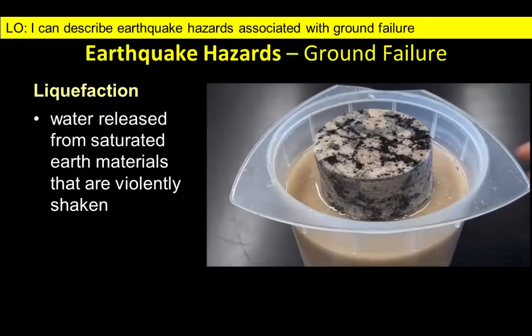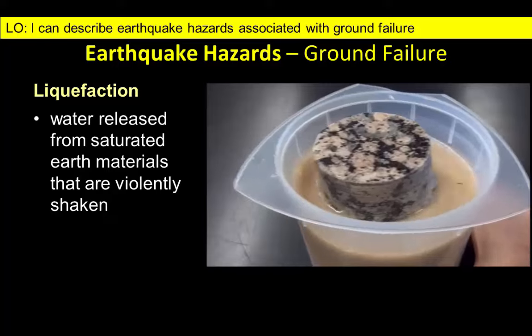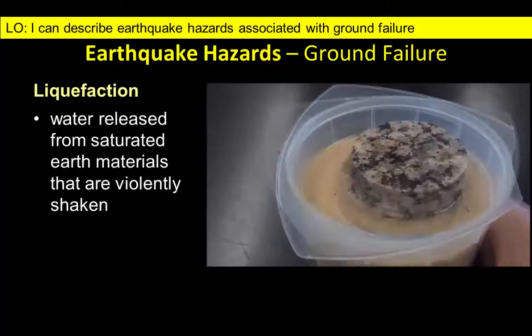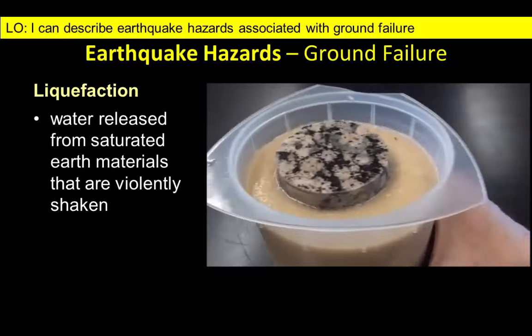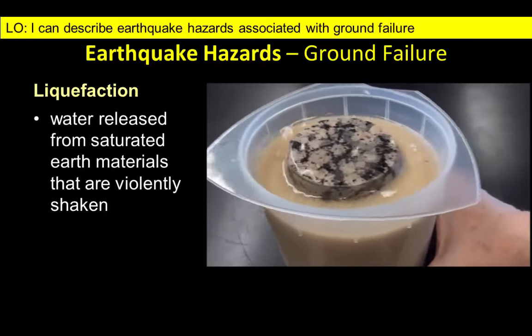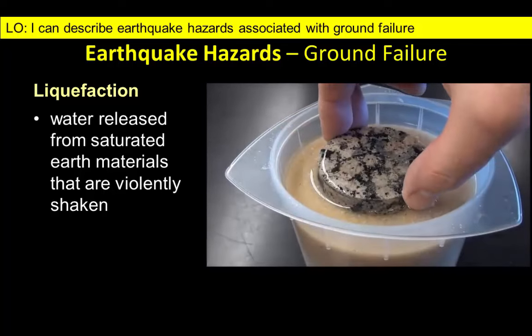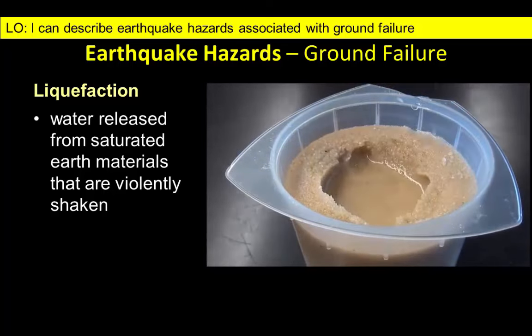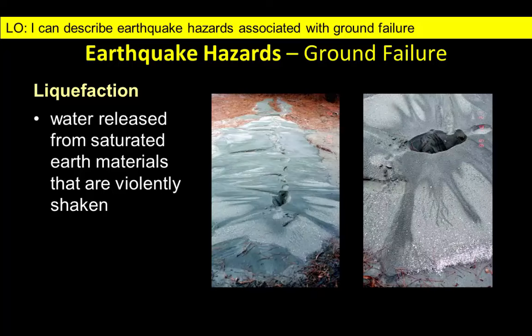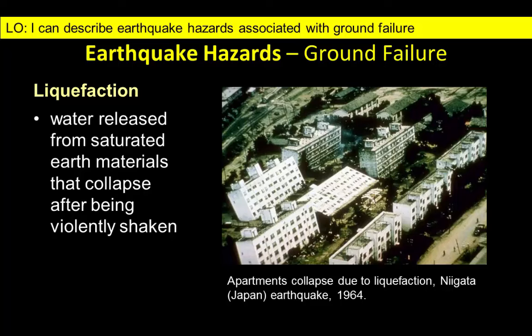Liquefaction occurs when shaking causes the compaction of sediment, increasing water pressure, and causing water and water-saturated materials to be ejected at the surface. In this example, a block of granite sinks into the underlying saturated sands when the material is shaken vigorously. Local structures like sand boils or sand volcanoes are often produced as a result of liquefaction. Elsewhere, liquefaction results in subsidence of the land surface and causes objects to collapse into the slurry of water and sediment. In the most extreme events, this can cause whole apartment buildings to collapse as the ground beneath them gives way.